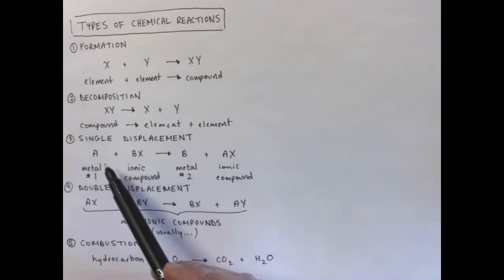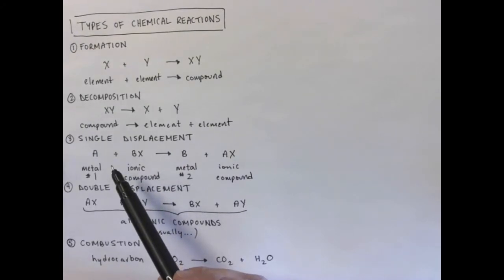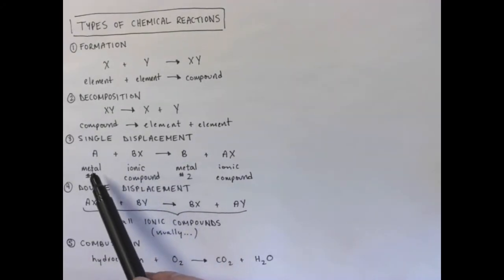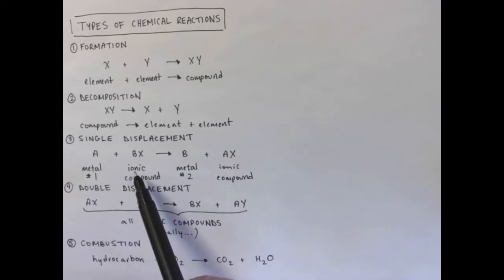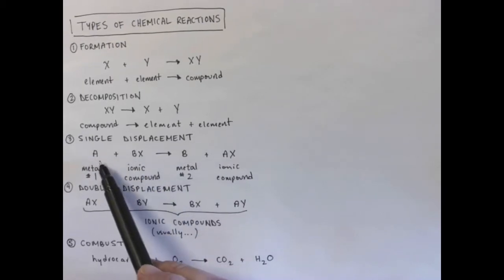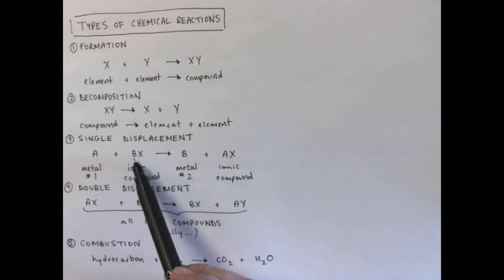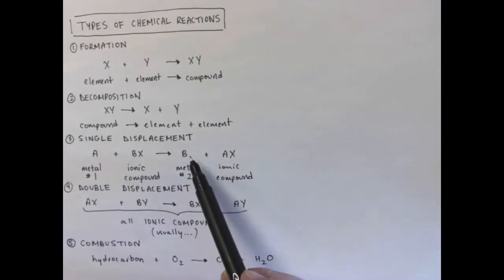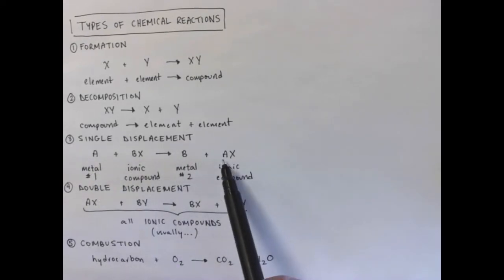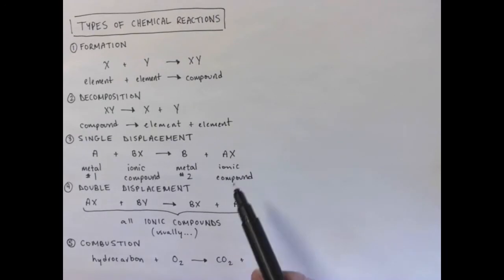A single displacement reaction is now a little bit different. This time, we have a metal reacting with an ionic compound. And the ionic compound has a metal. B represents another metal. And what metal number one does is it kicks out the metal that's part of the ionic compound. And that metal ends up by itself. And metal number one, represented by A, is now part of the ionic compound.